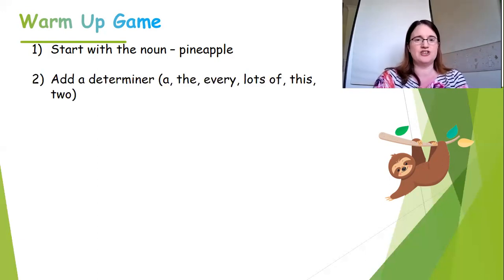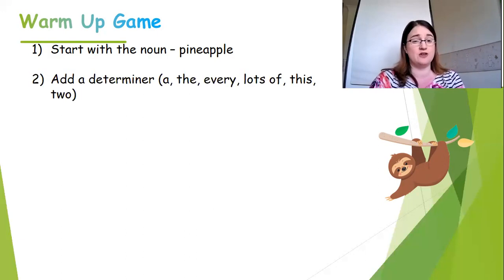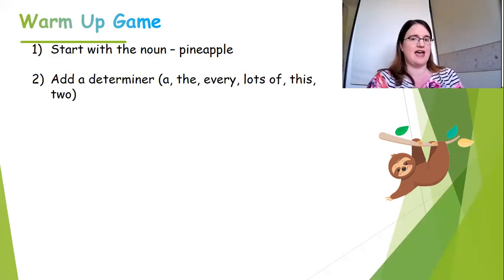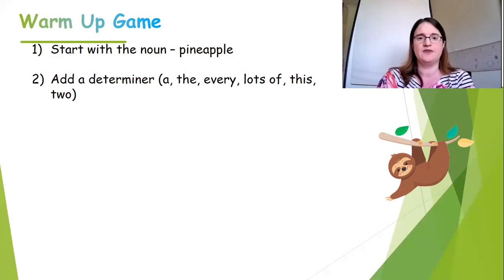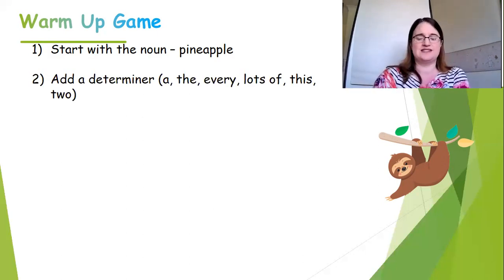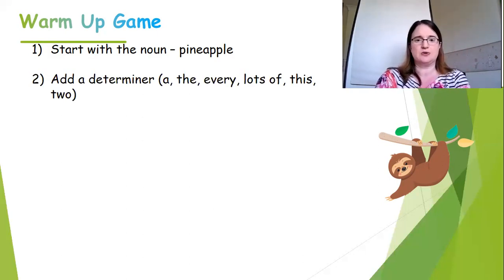I want you to add a determiner to the front of pineapple. You can add whatever you want - you could write two pineapples, you could write the pineapple, you could write a pineapple, you could write lots of pineapples. So write anything you want on that second line as long as you've got a determiner and the noun pineapple. Press pause until you've done that.